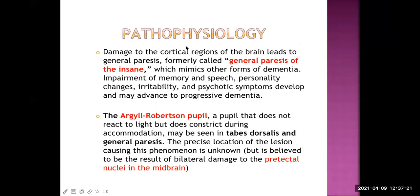General paresis of the insane occurs because of damage to the cerebral cortex. This patient presents with dementia — loss of memory — along with impairment of speech, personality change, irritability, and psychotic symptoms. All of these together are called general paresis of the insane — it is a type of brain disorder, essentially a type of dementia with personality change and psychiatric symptoms.